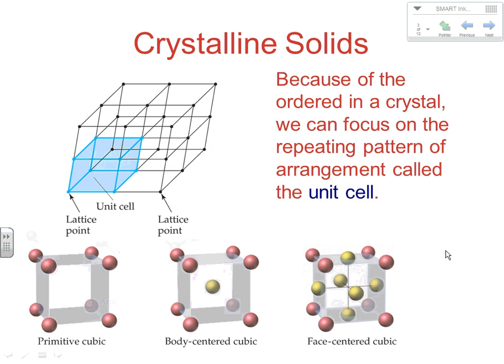One thing you should understand about how solids get put together is that a crystalline arrangement follows an ordered pattern. Because of the ordered nature of crystals, we can focus on the repeating pattern that exists inside every crystalline substance. On its simplest level, that pattern which gets repeated again and again in a larger structure is called the unit cell.